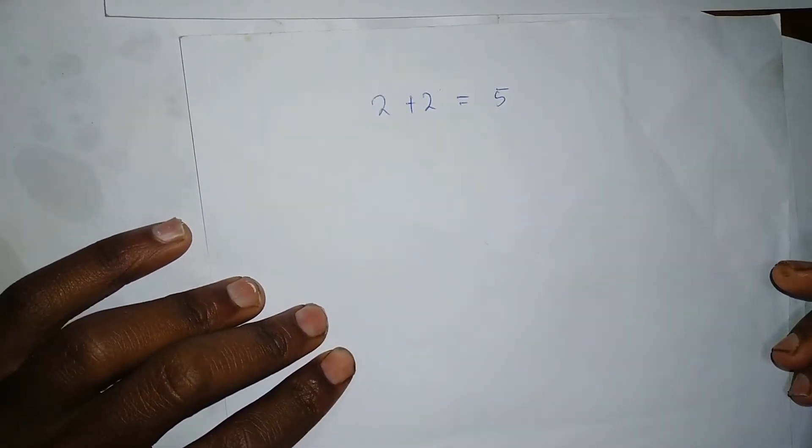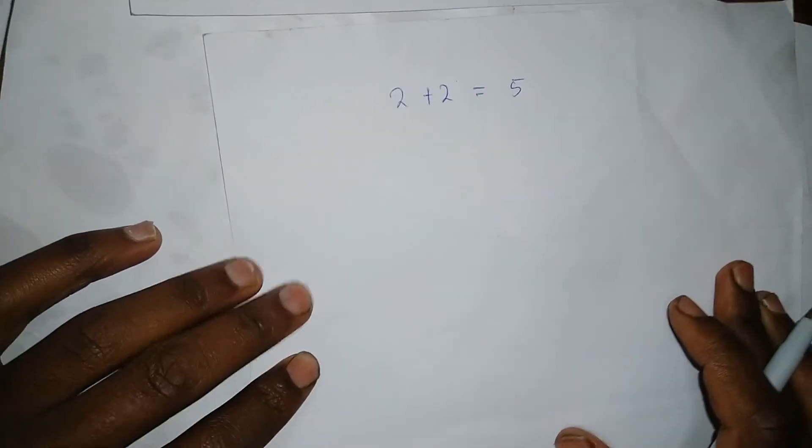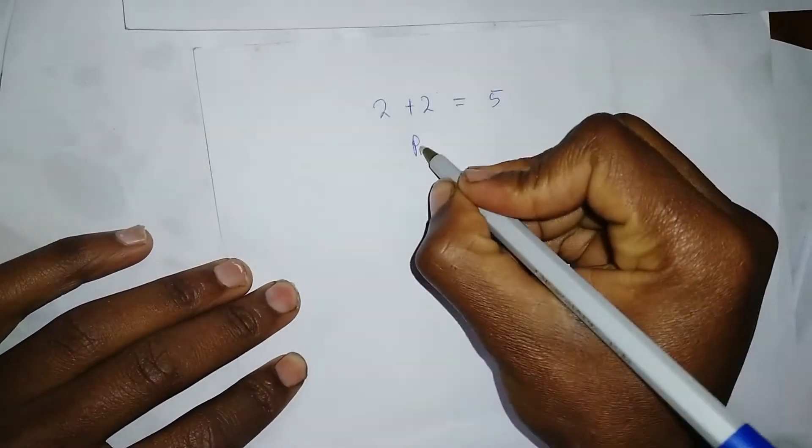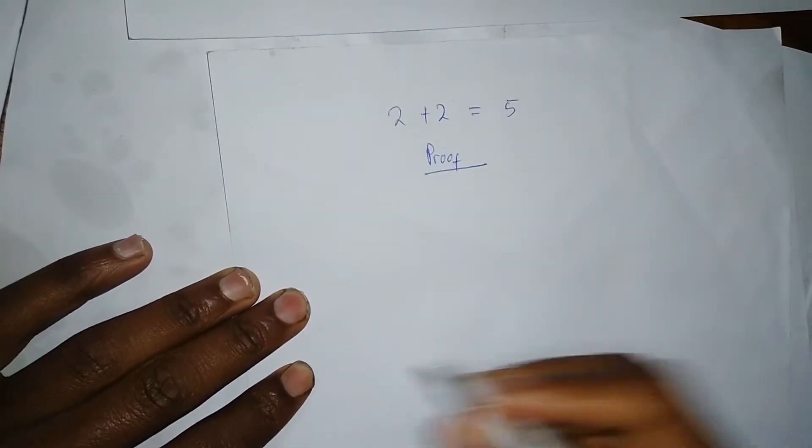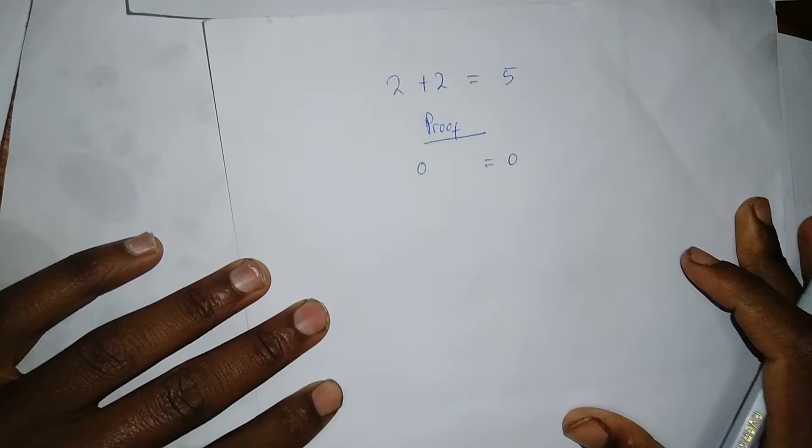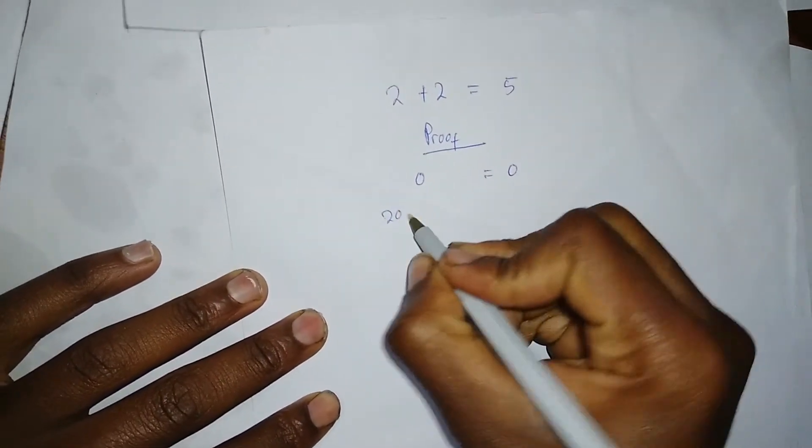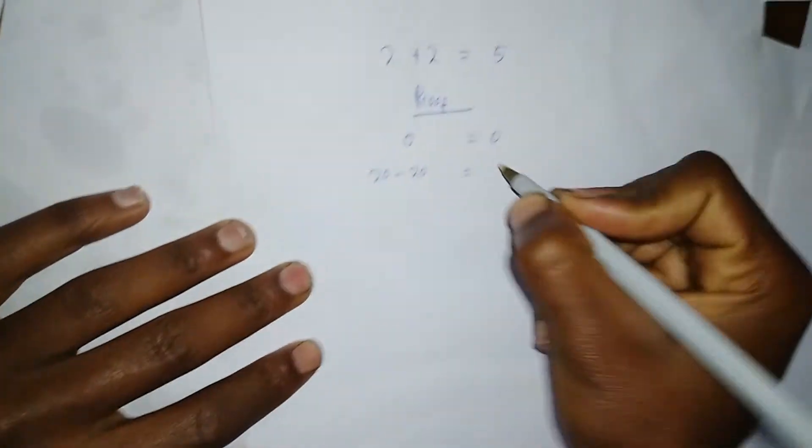But today I have just a simple proof that I have with me. So, proof: right, so 0 equals 0. We all know that this is mathematically correct, and we know that 20 minus 20 is equal to